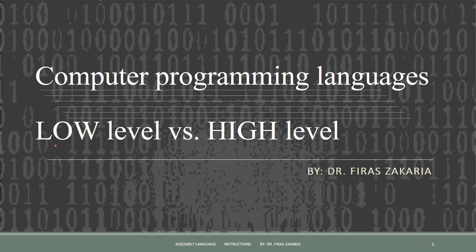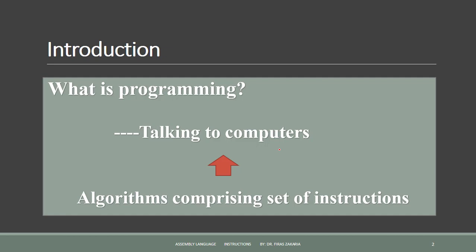We will see the difference between low-level and high-level languages as an introduction. What is programming? Simply, programming is talking to computers. A programming language is a formal language used to implement algorithms — a set of instructions to control or produce various kinds of output.